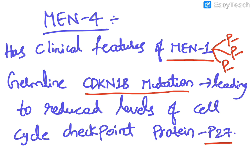MEN4 has clinical features similar to MEN1. For MEN1, remember the 3P mnemonic: pheochromocytoma — no; parathyroid adenoma — yes; pancreatic adenoma — yes; and prolactinoma involving the pituitary — yes. So MEN1 individuals manifest with the 3P manifestation: pituitary (prolactinoma), parathyroid (parathyroid adenoma), and pancreas (pancreatic adenoma).